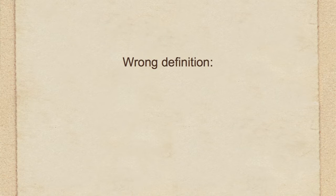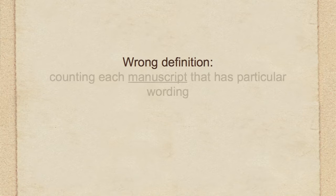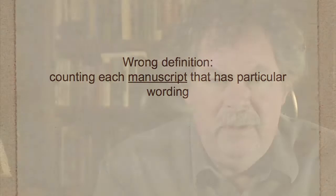In 1965, that author said that a textual variant is one in which any time you have a number of manuscripts that differ with a different number of manuscripts, you count each manuscript that differs as a variant. But this is a very unorthodox and unacceptable definition for a textual variant.